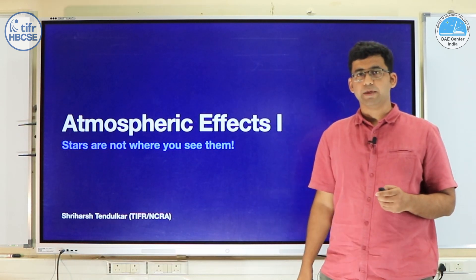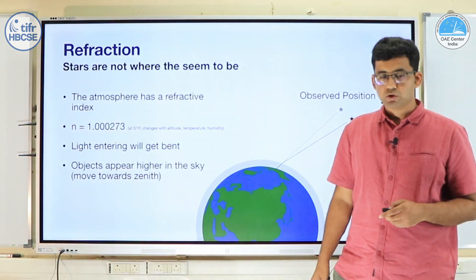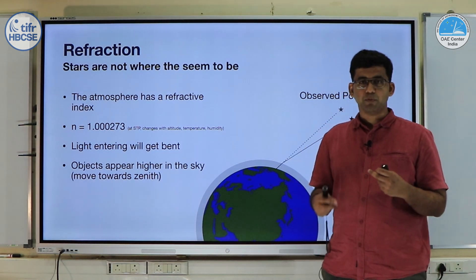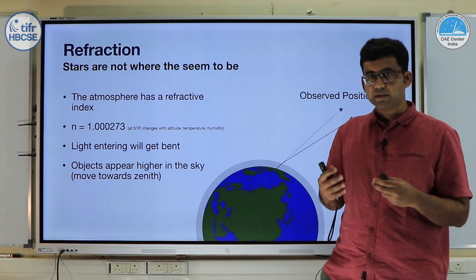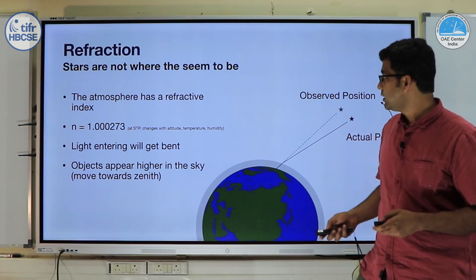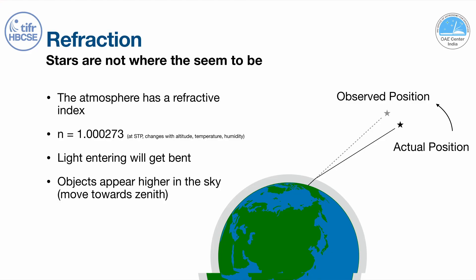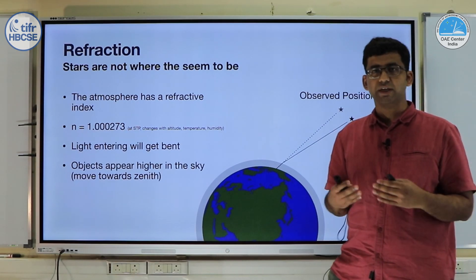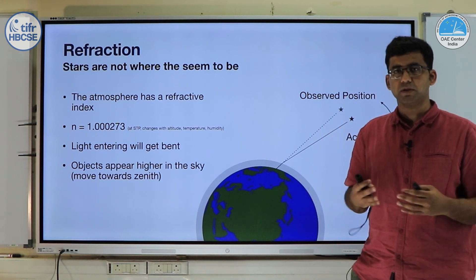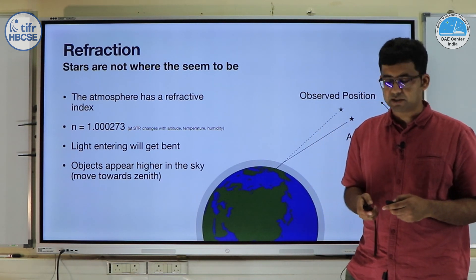Stars are not where they seem to be. The effect we are going to talk about is refraction. The atmosphere has a refractive index — it is very close to 1, but not exactly 1. The refractive index of the atmosphere at standard temperature and pressure is 1.000273. This changes with altitude as the pressure, temperature, and humidity of the air change.